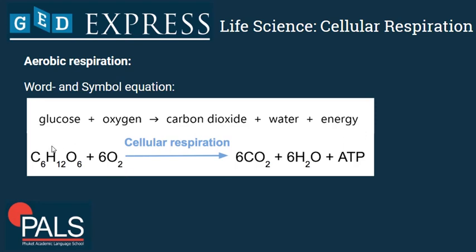Or the symbol equation: glucose plus six oxygen molecules gives us six carbon dioxide and six water, plus a couple of molecules of ATP that the cell can now use for any process that requires energy.